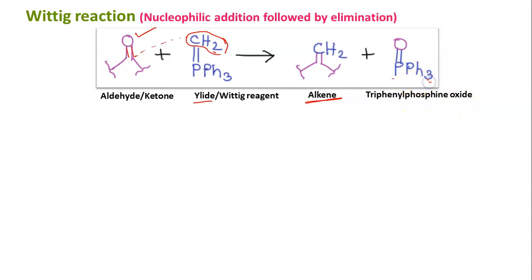It is not necessary that there must be phenyl groups — any other group may also be used — but in this case there are three phenyl groups, so it is triphenylphosphine oxide. If you look directly at the product, it is actually not the addition product, because after addition there is also elimination. The final product is a C=C double bond (alkene), and the starting material is a C=O double bond. So basically, this is a very good process to make a C=C double bond starting from a C=O bond.